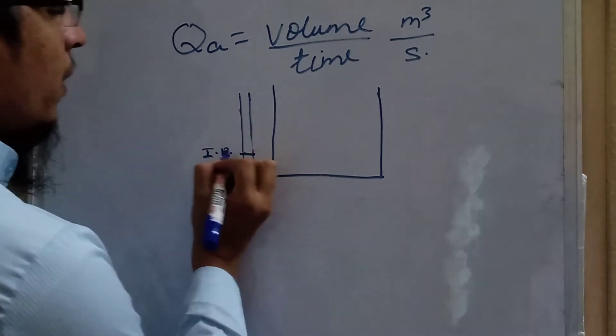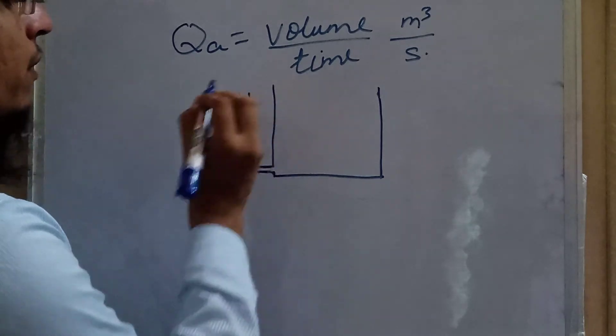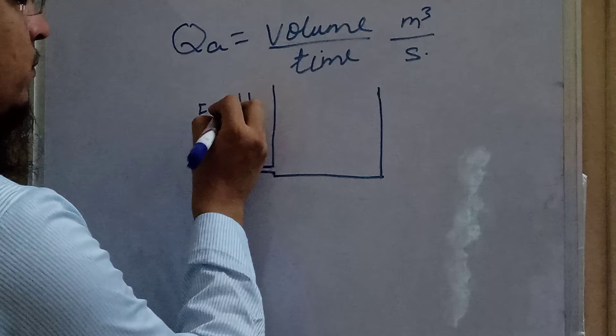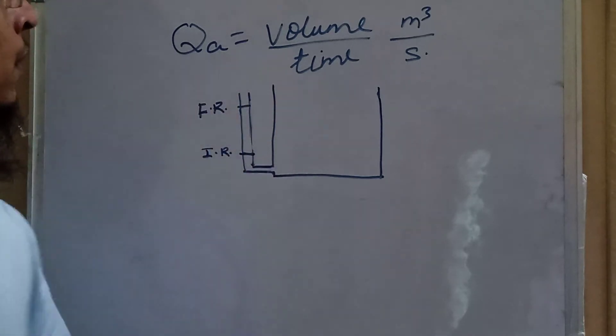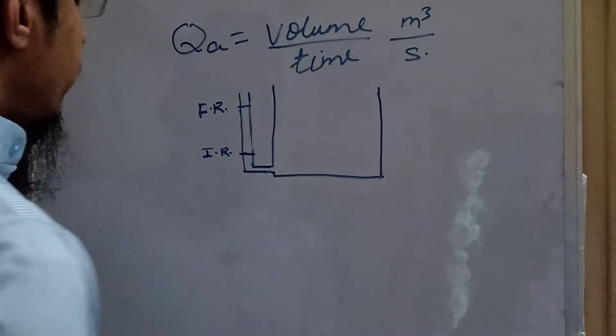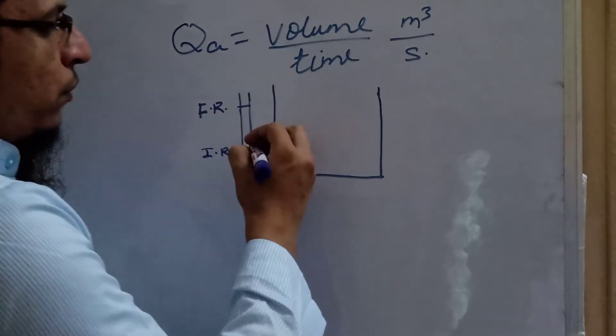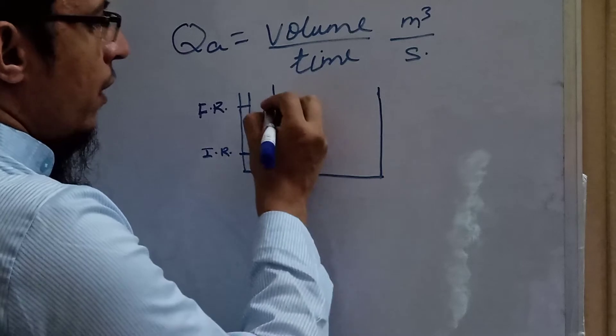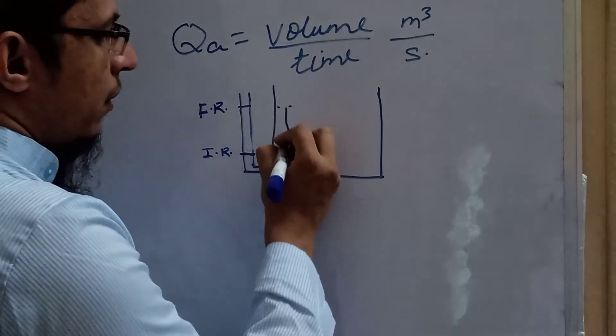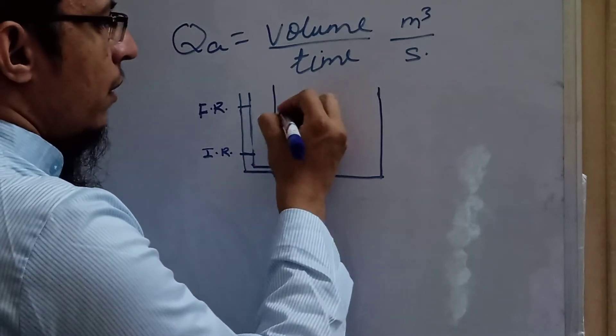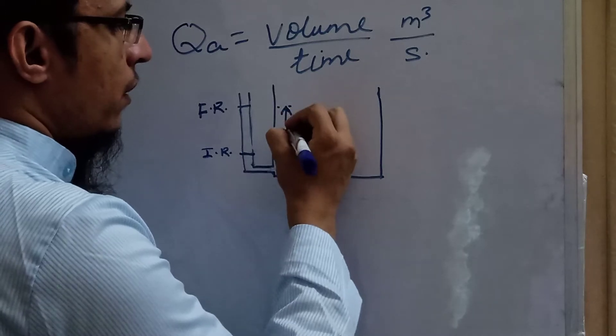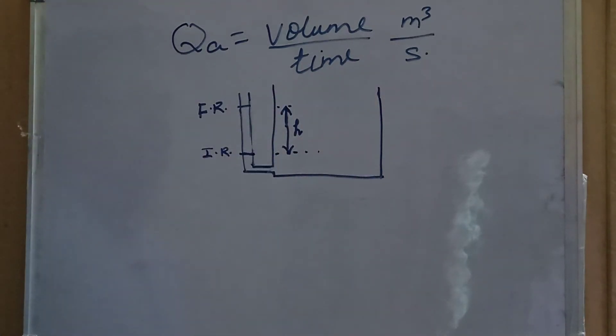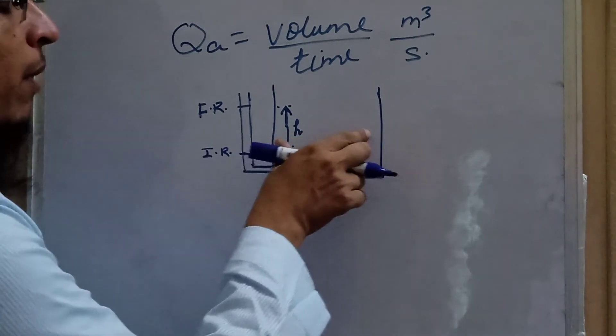Now taking the difference of these two, we get the height of water collected in the tank during this period, that is during the time t. What is the height of water collected in the tank? We have known, and this height multiplied by the cross-sectional area will give the volume of water or volume of fluid collected in this time.